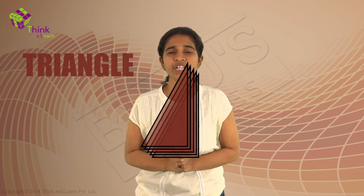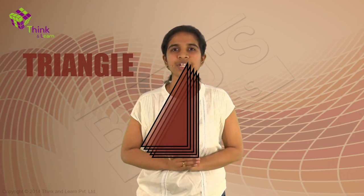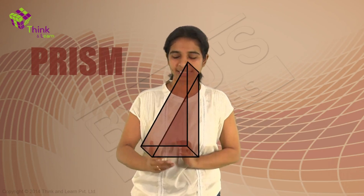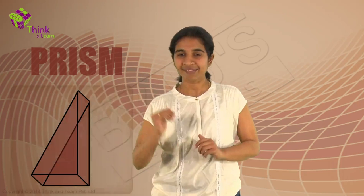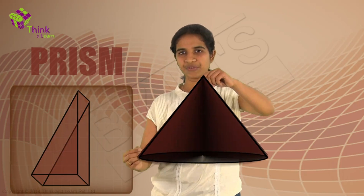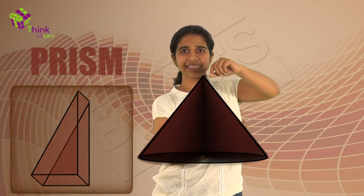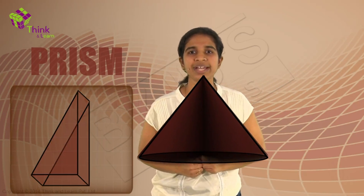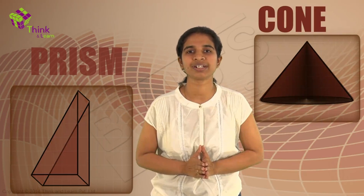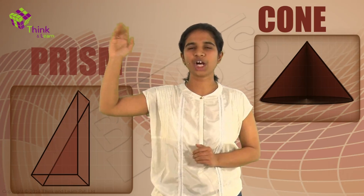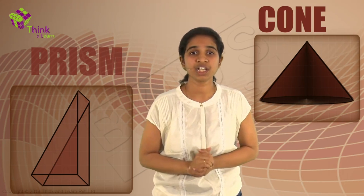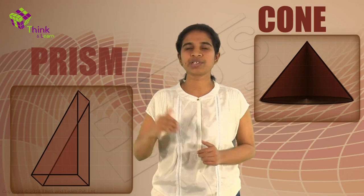Let's try a triangle. Let me take a right-angled triangle here. If we stack up many right-angled triangles together, what do you get? You get a prism. Can we stack them up in a circle? If you take the same triangle and stack up many triangles in a circular fashion, you get a cone. With a rectangle, we got a cuboid and a cylinder. With a triangle, we got a prism and a cone.